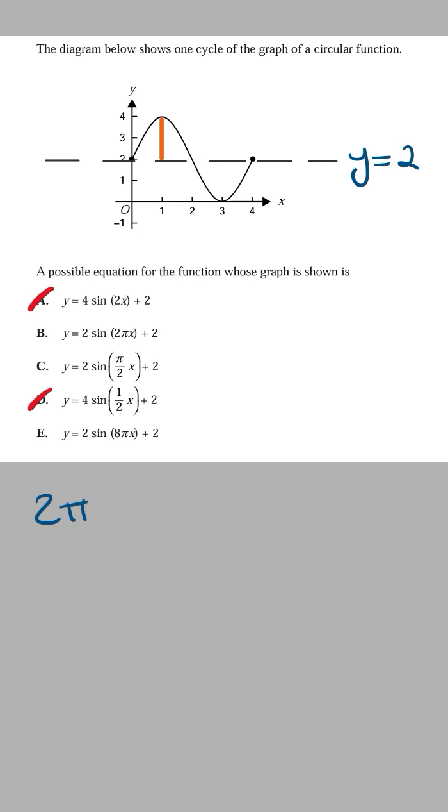This function is a sine function. The period of a sine function is 2π/n and this is going to equal to 4. Rearranging this to solve for n, we're going to get n equals 2π/4, which is simplified to π/2, which means the coefficient of the x term inside the brackets is going to be π/2.